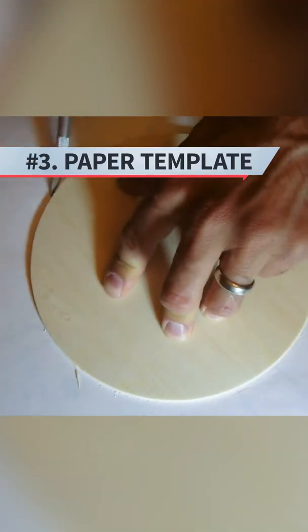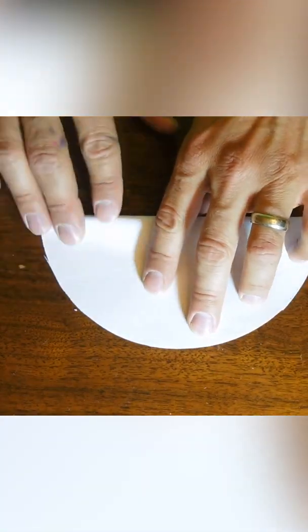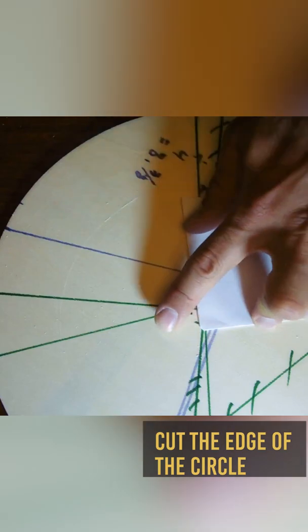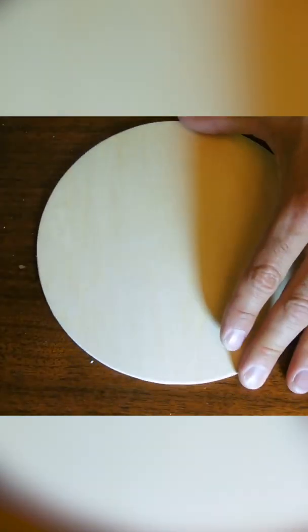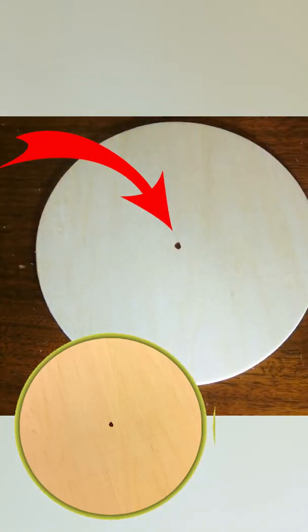We're gonna be cutting out a template with a piece of paper. Fold it in half that way. Fold it in half another way. Cut the edge of my circle. I've got a template, and there's the center of my circle.